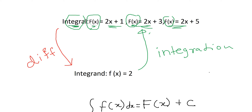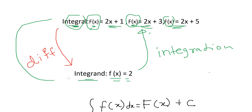The derivative is called the integrand in most cases, and this integrand is denoted by the small f of x. So if you differentiate the integral you get the integrand, but if you integrate the integrand you get the original function. It's like a cycle — quite interesting.